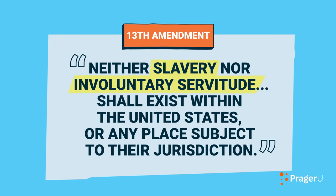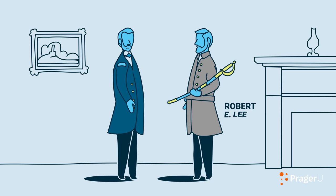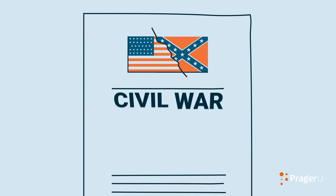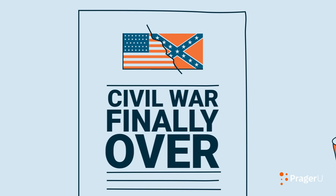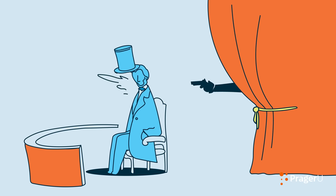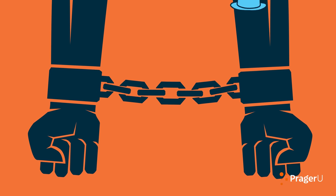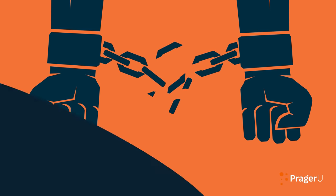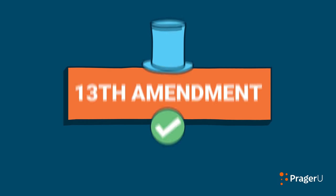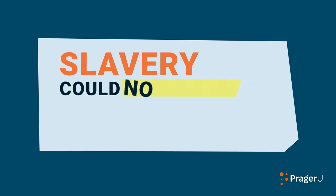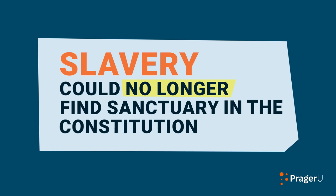On April 9 of that year, Confederate General Robert E. Lee surrendered to Union General Ulysses S. Grant. The Civil War was finally over. Less than a week later, Abraham Lincoln was dead, felled by an assassin's bullet. But his ambition to free the slaves lived on. On December 6, 1865, the American people ratified the 13th Amendment. Slavery could no longer find sanctuary in the Constitution.